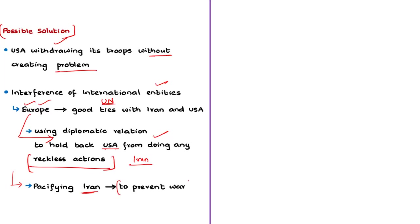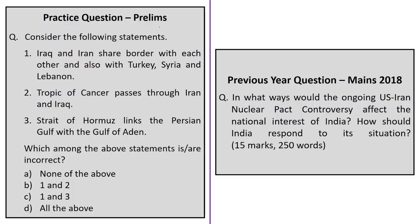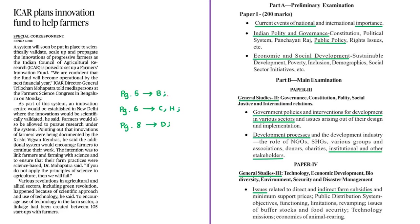So in this context, we discussed the recent escalations of tensions in the Middle East — what actually happened and what are the consequences of these tensions. With this we have come to the end of analysis of these news articles. The displayed practice question will be discussed at the end of the session. Now let us proceed to the next news article analysis.